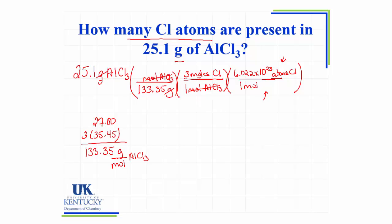Note that whatever I put on the top is always going to be equal to what is on the bottom. In this case it was 3 moles of chlorine to 1 mole of AlCl3 — there was a relationship between those two values, just like there's a relationship between Avogadro's number of atoms and 1 mole. Now my moles of chlorine cancel and I can actually solve my problem. I multiply 25.1 times 3 times 6.022 times 10 to the 23rd and divide by 133.35, and I get 3.40 times 10 to the 23rd atoms of chlorine.